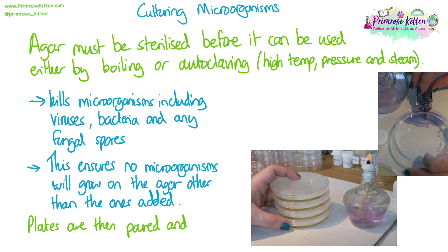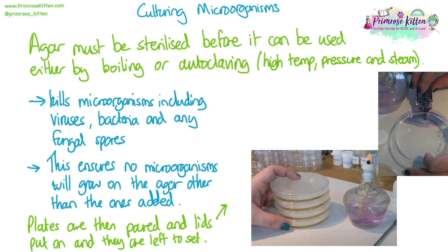The plates are then poured. You can see in the top image that we're pouring some kind of purple liquid — just so you can see what it looks like, because the agar is normally transparent — pouring that into the plate. Once you've let it level out, you leave it to set. It will cool down and solidify.